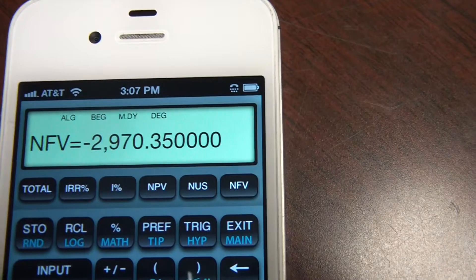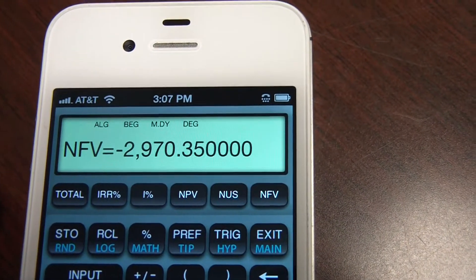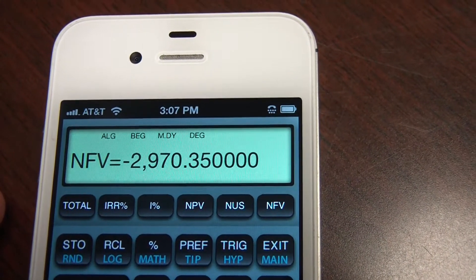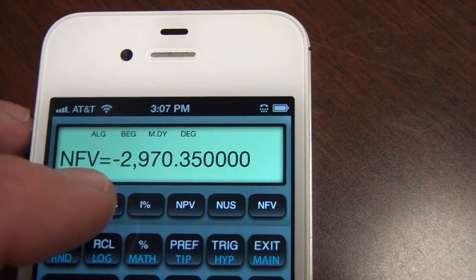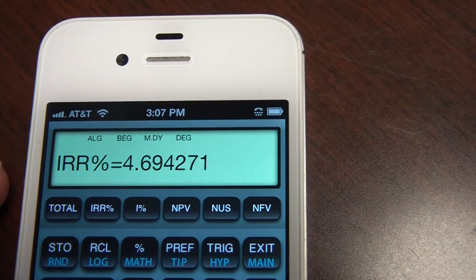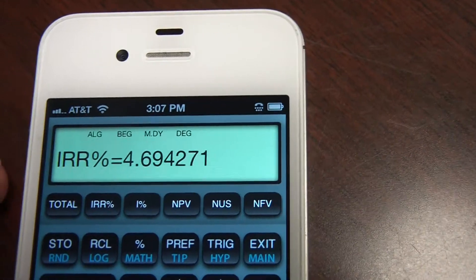Internal rate of return calculation on this. 10% is too high. It's more than this is generating. So I would like to know what my internal rate of return on this project is. Click the internal rate of return key and I find out it's 4.69%.